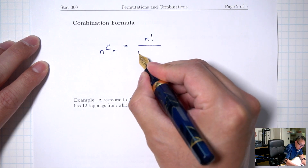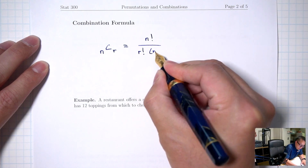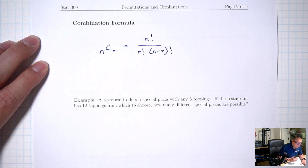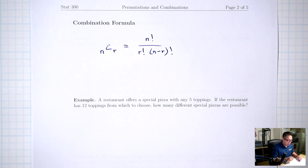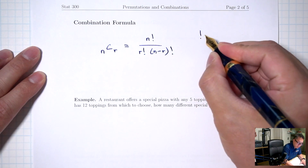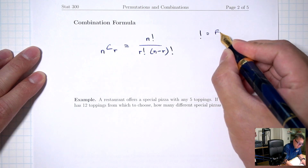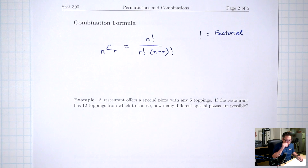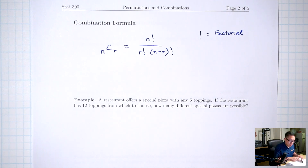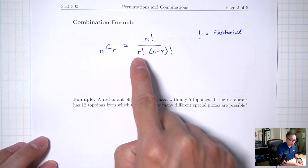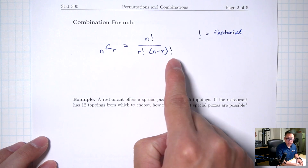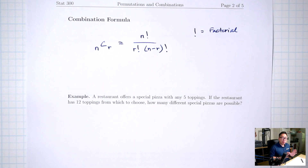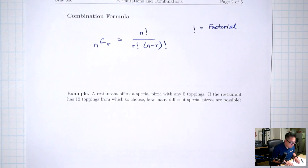So how do you count combinations when the order does not matter? I'm going to first count this the long way by listing out all the possibilities, then talk about a formula, and then show you how to use a calculator. So I'm going to list out all the three-person teams. I can have Alan, Brooke, Courtney — which I'll write as ABC.